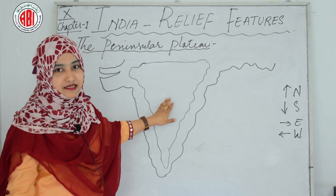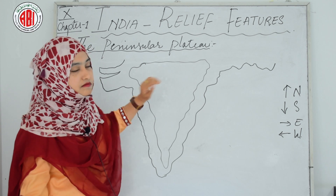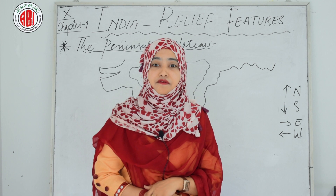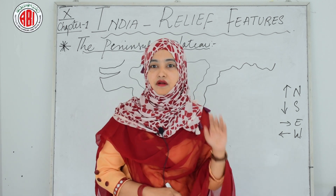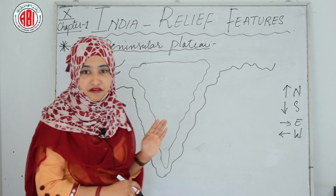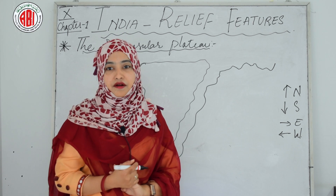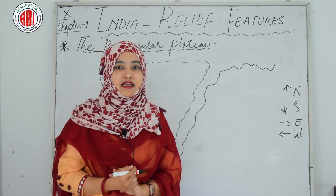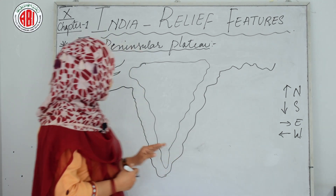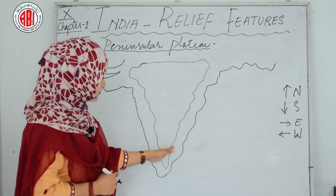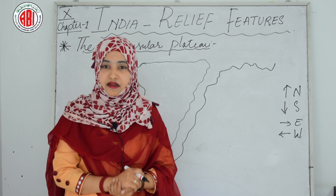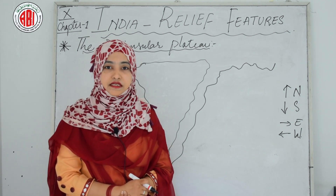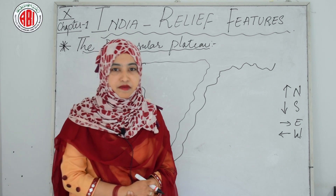It is called the Deccan Plateau. The Satpura range forms the northern edge of the Deccan Plateau, while the Mahadeo, Kaimur range and the Maikal range are the eastern edges. The Western Ghats, Eastern Ghats and Nilgiris form the western, eastern and southern boundaries respectively.